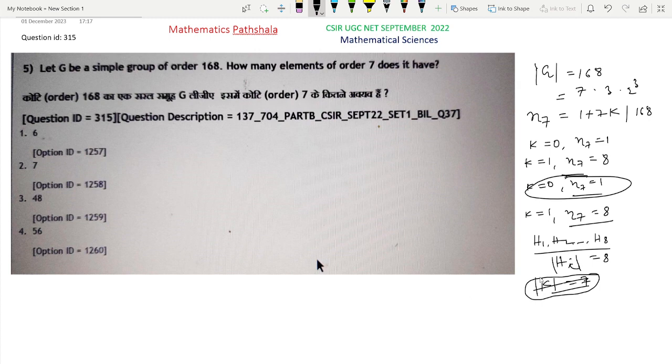Now see, for H1, H2, through H8, take any two HI and HJ. This is very clear that HI intersection HJ must be a subgroup of HI as well as HJ, so the order is either 1 or 7. If it is 7, then HI equals HJ, which is a contradiction since we have taken two distinct subgroups with I not equal to J. So we must have HI intersection HJ equal to singleton E. If we take any two Sylow 7-subgroups, the common element is only the identity element.